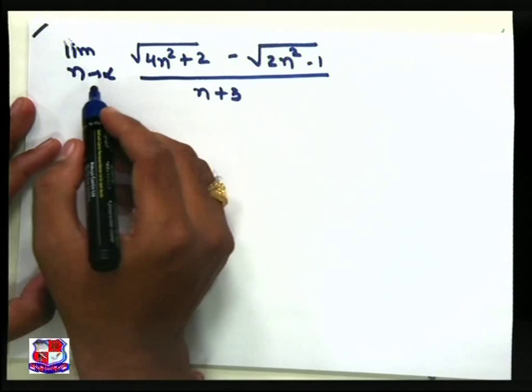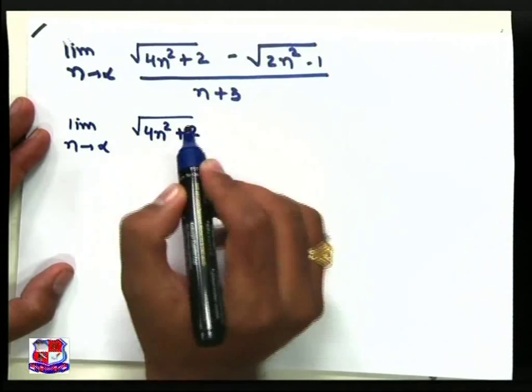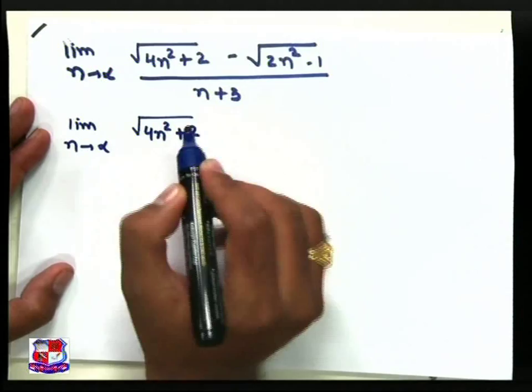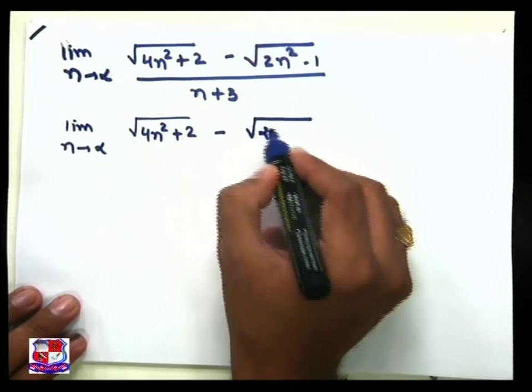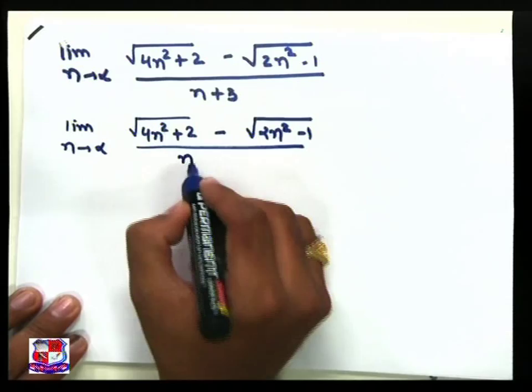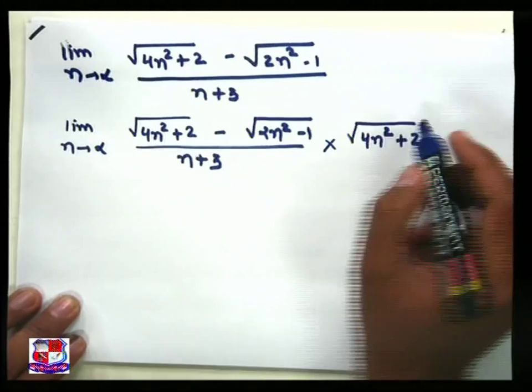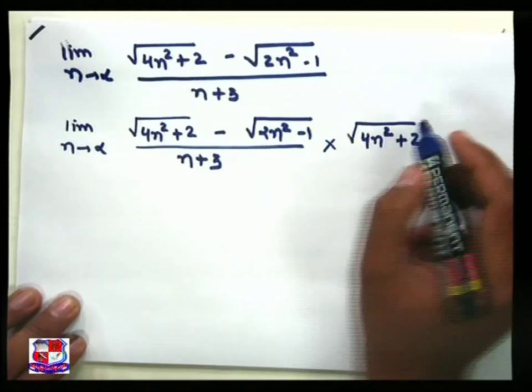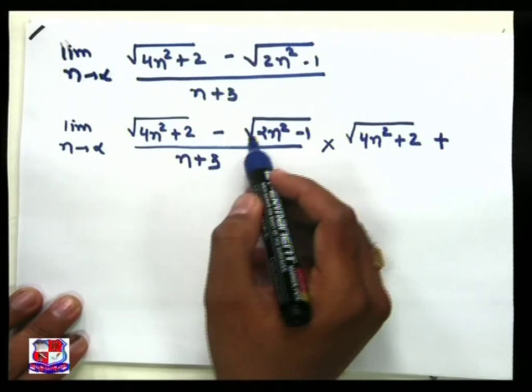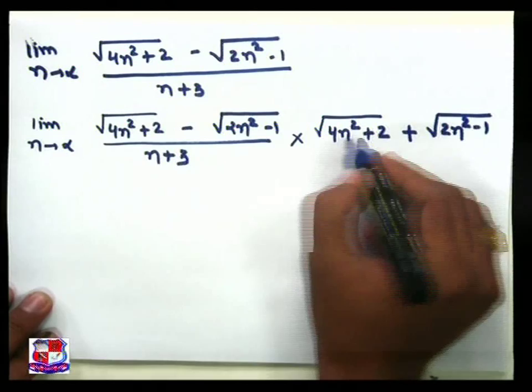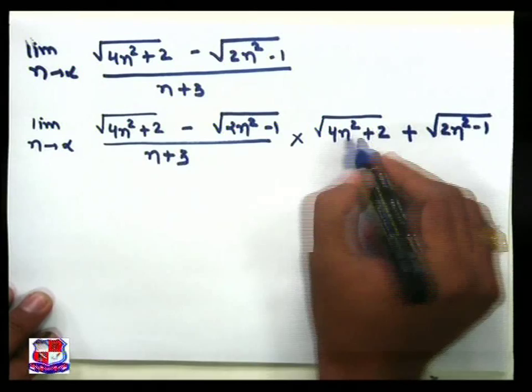So here √(4n² + 2) − √(2n² − 1) divided by (n + 3). Rationalization of the numerator term means multiply and divide with √(4n² + 2), with the minus sign becoming plus, and √(2n² − 1). This value we also divide. Ultimately our numerator, √(4n² + 2) − √(2n² − 1), remains as it is.